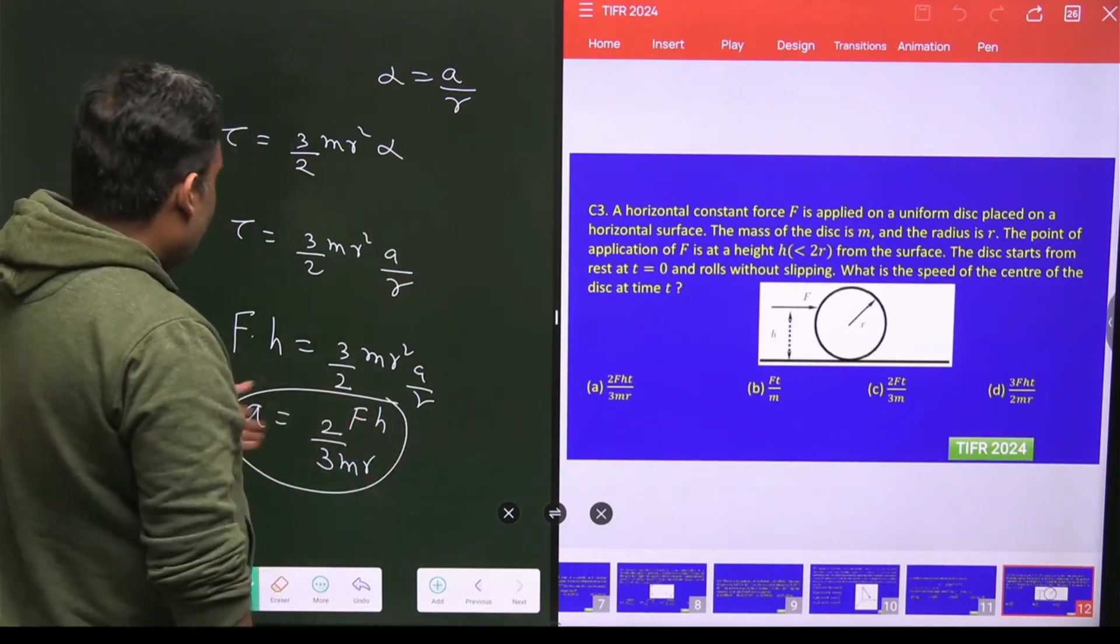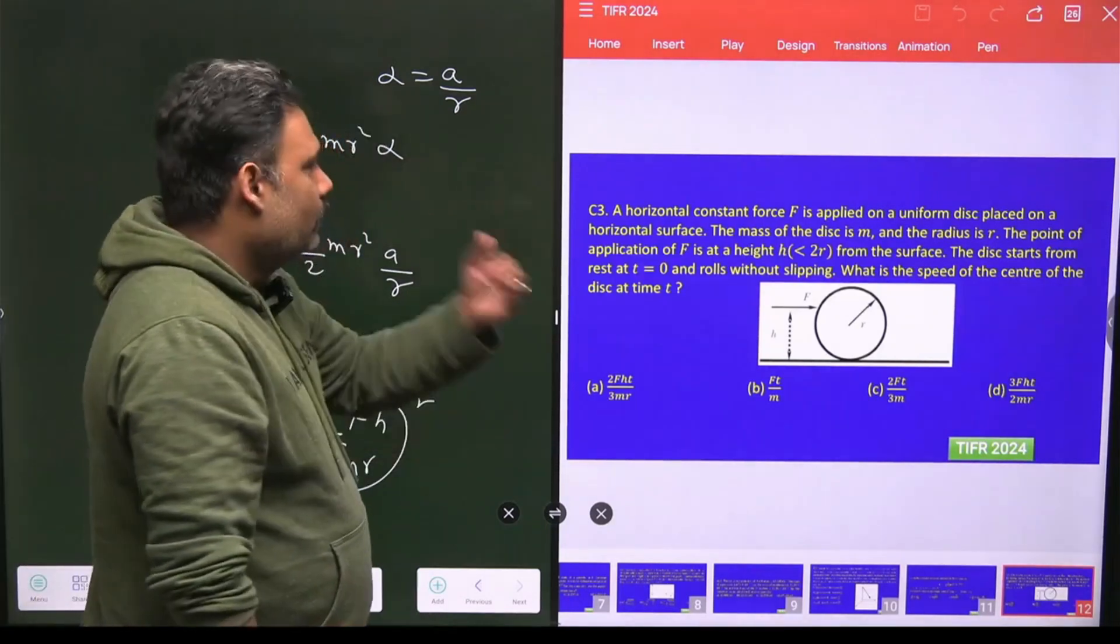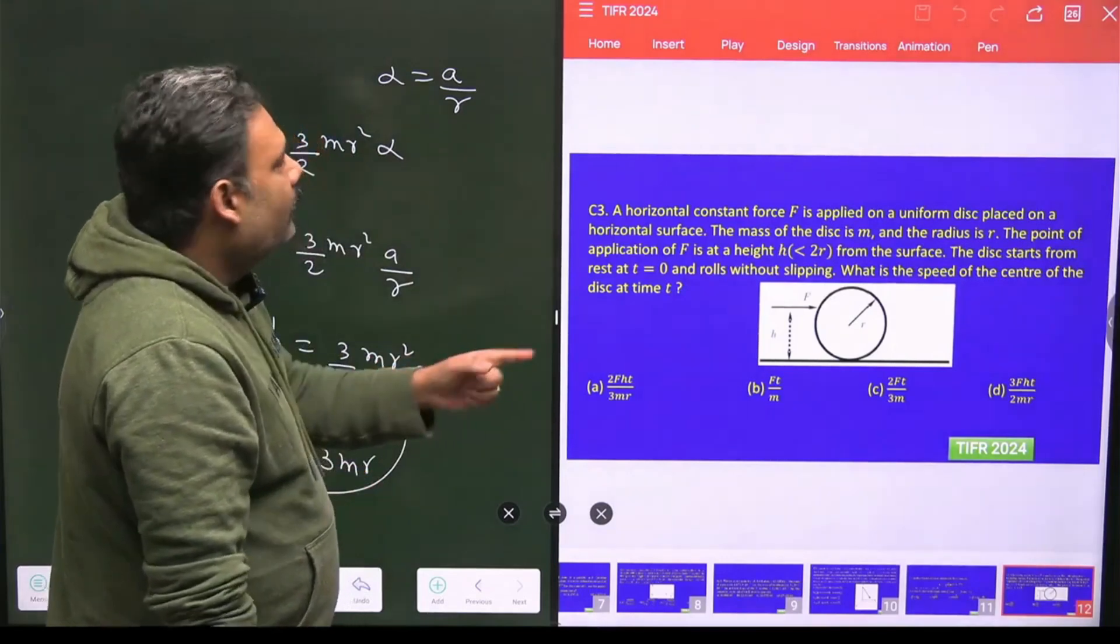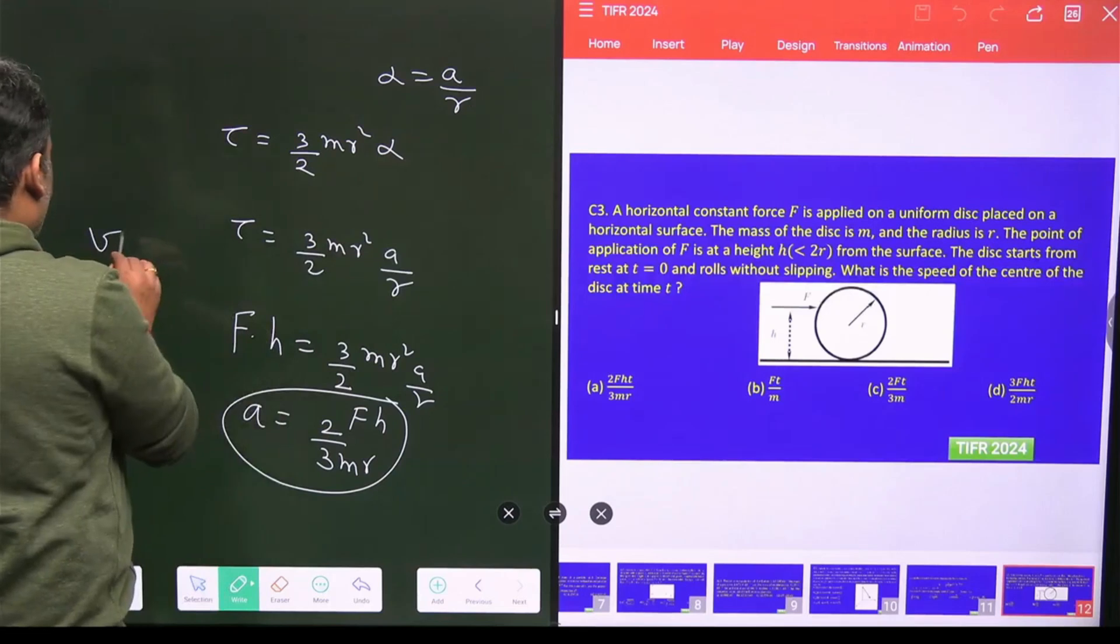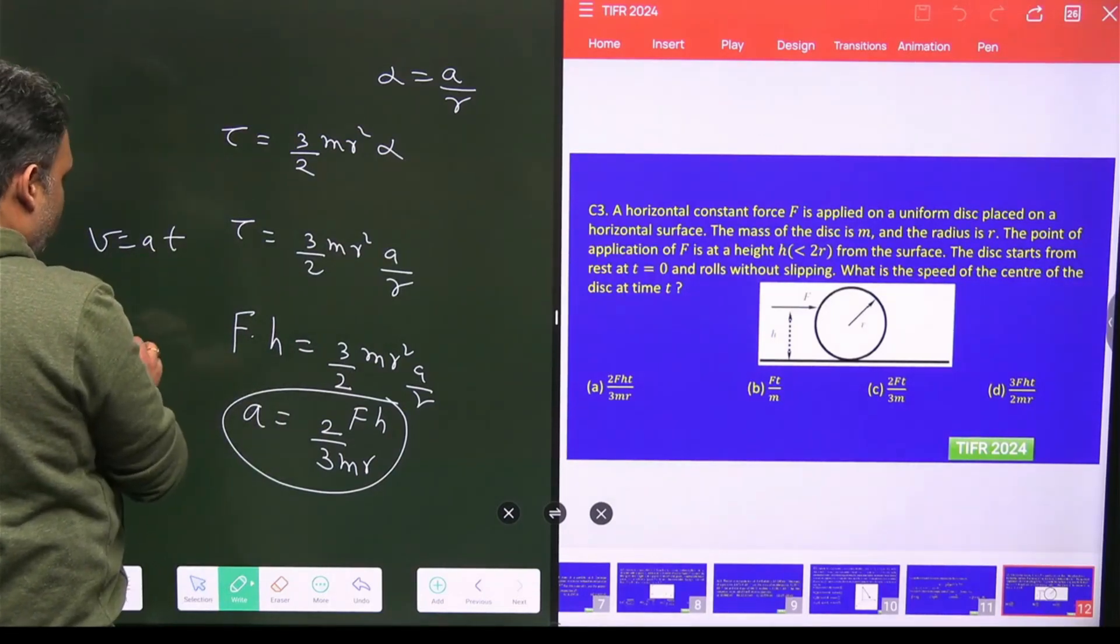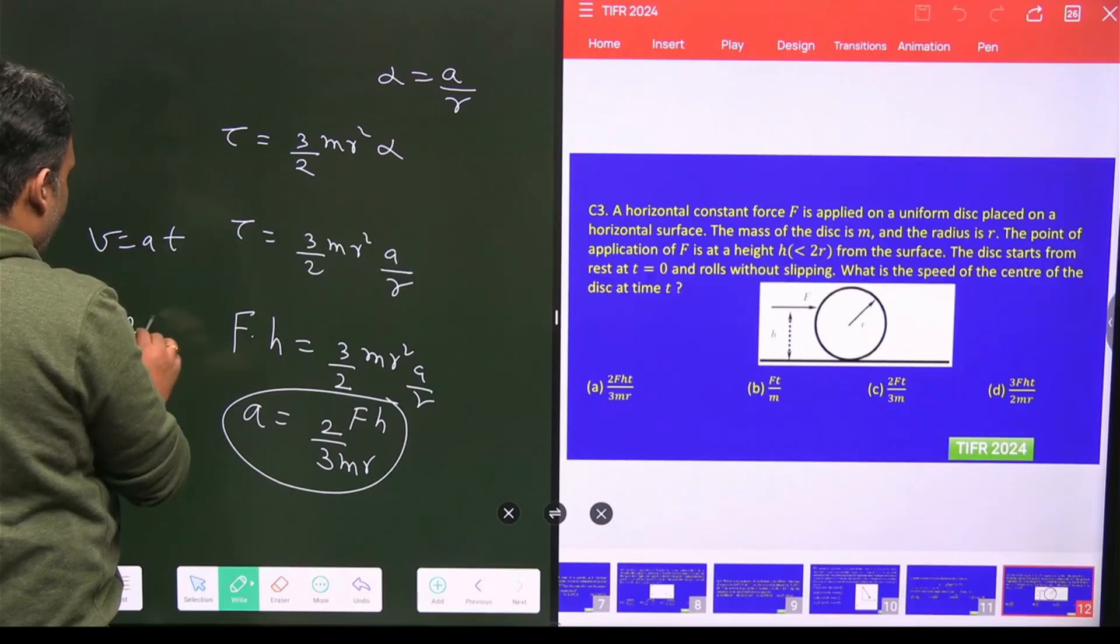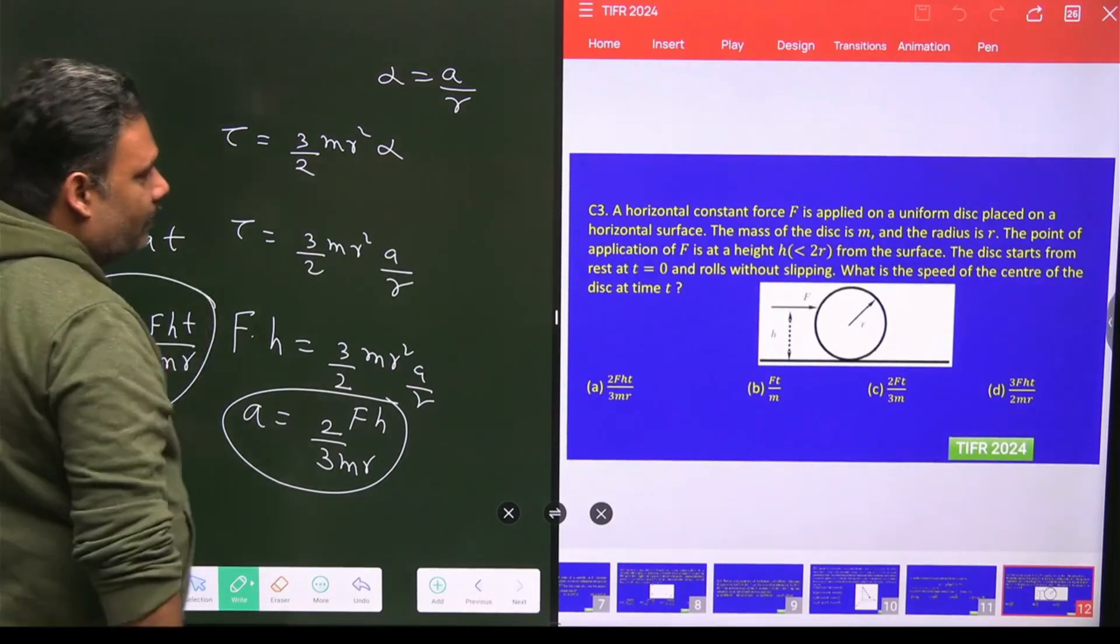And if this is my initial acceleration, this acceleration will always remain constant, this is constant acceleration. So after time t, the velocity v equals A times t. So this velocity equals 2 by 3 fxt by mr. So this will be your answer.